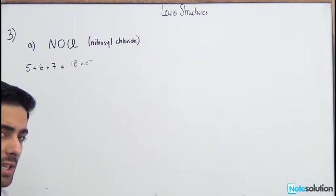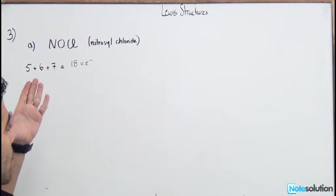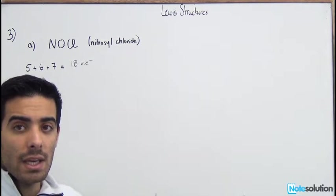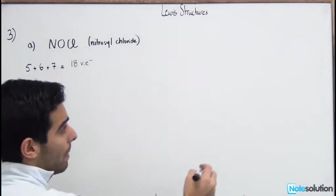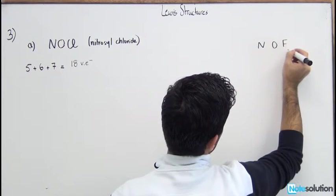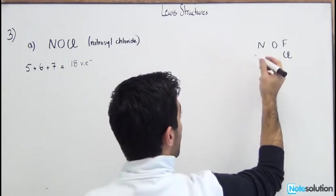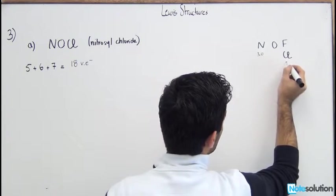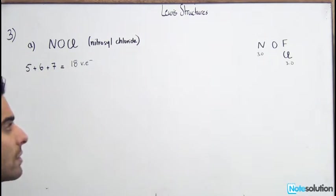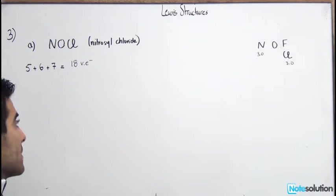The central atom is the least electronegative atom. O is one of the most electronegative atoms and cannot be in the middle. For N and Cl, if you look at the periodic table, they both have an electronegativity of 3.0, so both are possible central atoms.